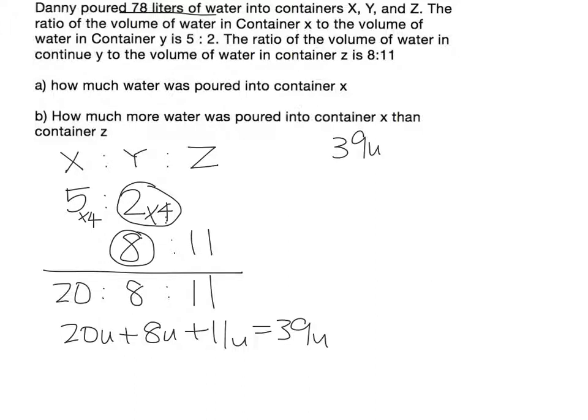Therefore, 39 units is the total amount of water in all 3 containers x, y and z. That would be equal to the 78 liters of water. Therefore, 1 unit is 78 divided by 39 which is 2 liters.